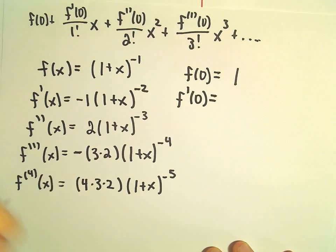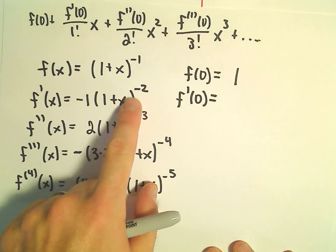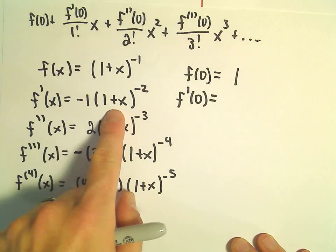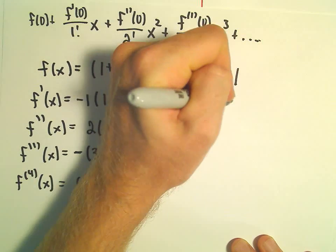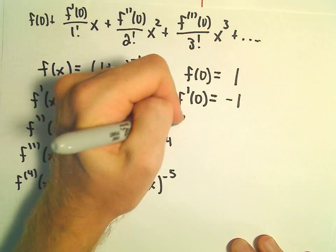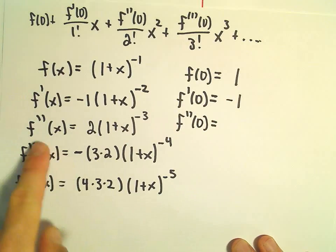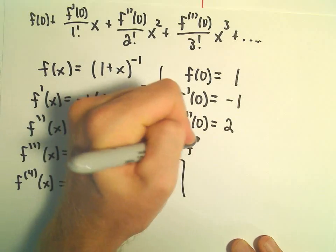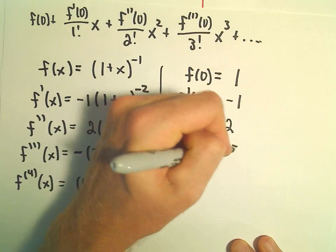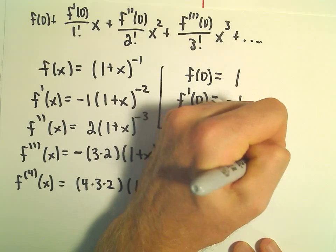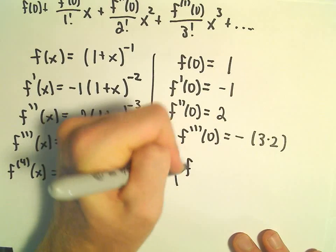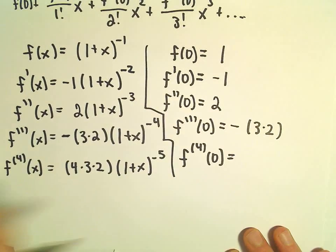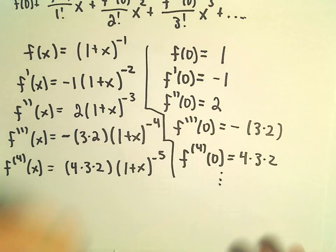f'(0), again, we'll get 1 to, you know, in the parentheses we're going to get 1 to an exponent, but 1 to any exponent is just 1. So all we're going to be left with are the coefficients. So we'll get -1, f''(0) that's going to be positive 2. f'''(0), that's going to be -3 times 2. And then the fourth derivative at 0, it looks like we'll have positive 4 times 3 times 2.